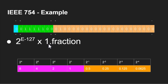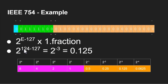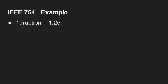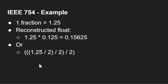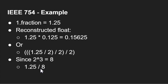Ignoring the sign, the formula is: 2 to the power of (exponent minus 127). So if the exponent were 128 it would be 2^1; if 126, it would be 2^(-1). Then you multiply that by 1-point-fraction — so it's not just the fraction, it's 1 point and then the fraction. In our case, 124 minus 127 is minus 3, so that's 0.125. The fraction part gives 1.25, and 1.25 multiplied by 0.125 equals 0.15625, or equivalently 1.25 divided by 8.